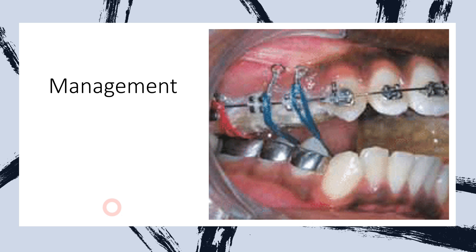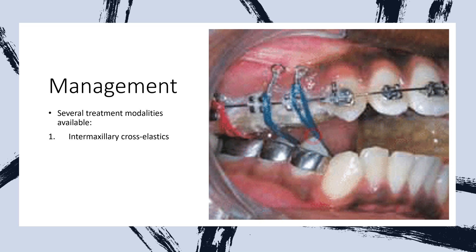Moving on towards the management of patients suffering from scissor bite, there are various appliances available offered to the patient depending on severity, personal choice, and the orthodontist's recommendation. The first option, seen in this clinical picture, is intermaxillary cross-elastics. These elastics are placed on the buccal surface of the maxillary molar and on the lingual surface of the lower mandibular molar. This exerts a buccal force for the lower molar so it is placed in a more buccal direction, thereby improving the scissor bite.